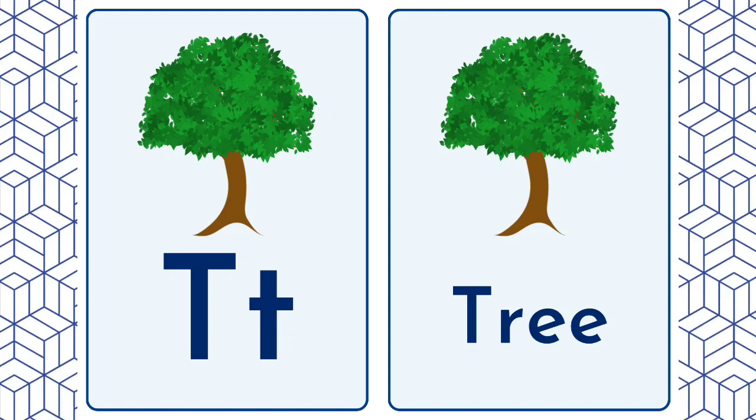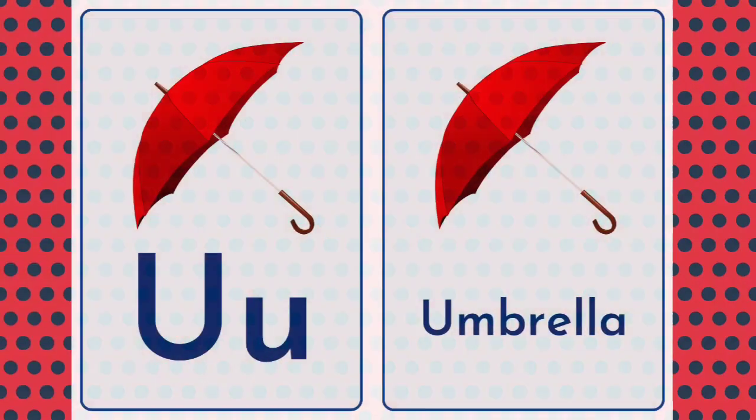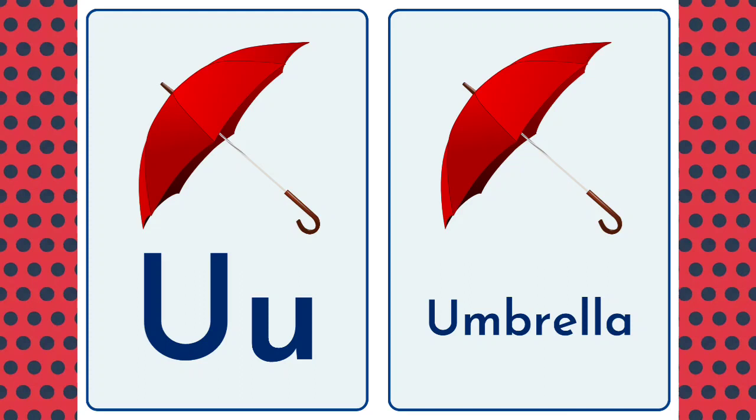T for Tree. Tata. Tree. U for Umbrella. U, U. Umbrella.